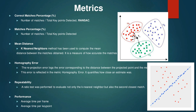The metrics used to evaluate the performance of these algorithms are as follows. The correct matches percentage is the number of matches divided by the total keypoints detected. RANSAC (Random Sample Consensus) is applied to find outliers — since not all matches are correct, RANSAC prunes the matches to get the best fit inliers. The match percentage is the second metric: the number of matches divided by keypoints detected. K-Nearest Neighbors (KNN) methods are used to compute the mean distance.